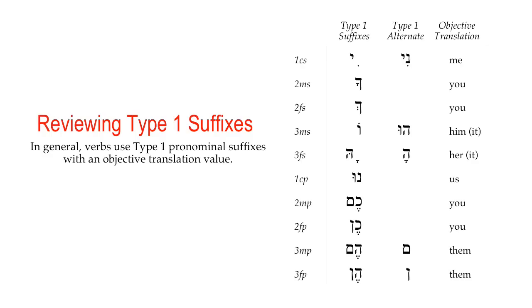In this chapter, we're going to be talking about pronominal suffixes that appear directly on the verb. We'll begin by reviewing the type 1 pronominal suffixes that will appear on verbs in Hebrew. In general, verbs will use type 1 pronominal suffixes with the objective translation values. You will see all the different type 1 suffixes you studied in the noun chapters, along with the alternate type 1 suffixes and their objective translation values. There are no new forms to learn on this chart.